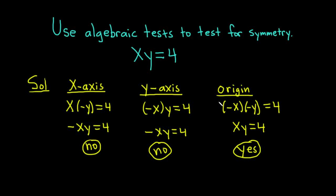To test for origin symmetry, you replace both variables x and y with negative x and negative y. If you get the same equation, the answer is yes; if you don't, the answer is no. Hopefully this video has taught you how to use algebraic tests to test for symmetry. If you feel like it's helped, make sure to check out other videos. Until next time, good luck and take care.